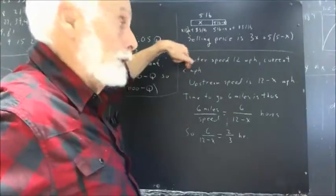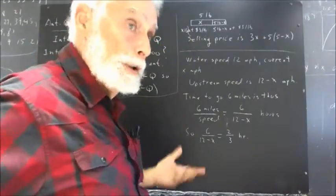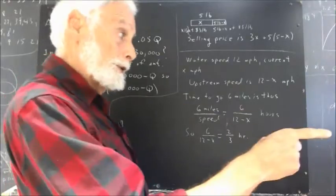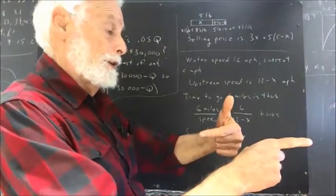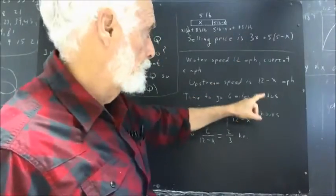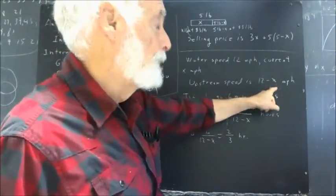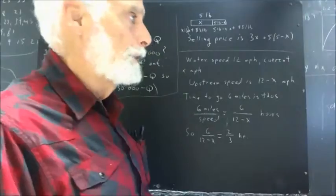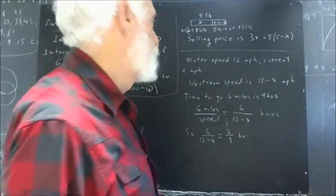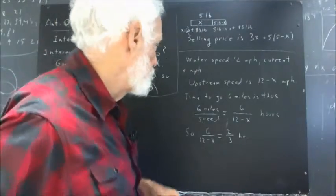Let's see. Water speed 12 miles an hour, current X miles an hour. What can we determine from that? What we determined is you're going upstream with the water coming downstream. Your speed with respect to the ground is 12 minus X miles an hour. Now, if you were going downstream, the water would be helping you. Your speed would be 12 plus X. That's something you kind of want to remember.